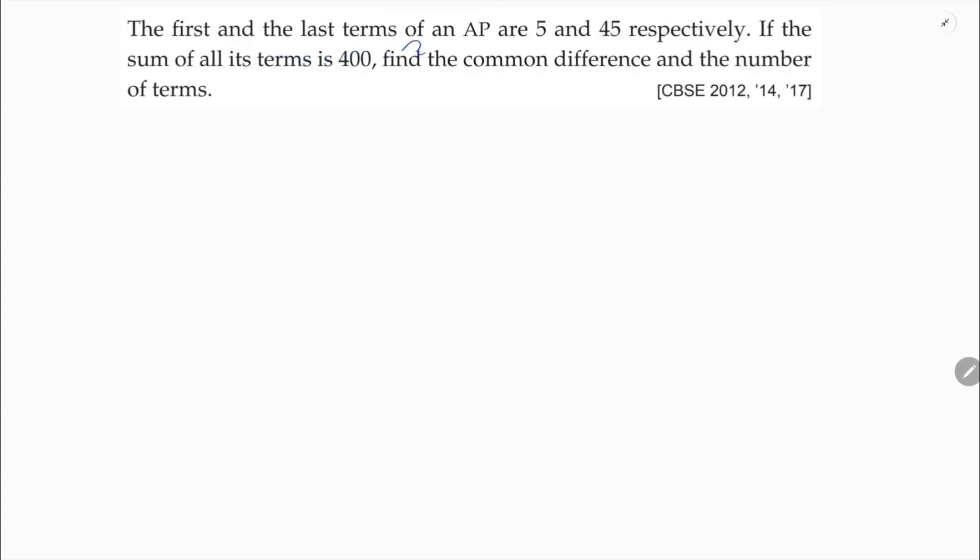The first and the last terms of an AP are 5 and 45 respectively. If the sum of all its terms is 400, find the common difference and the number of terms.